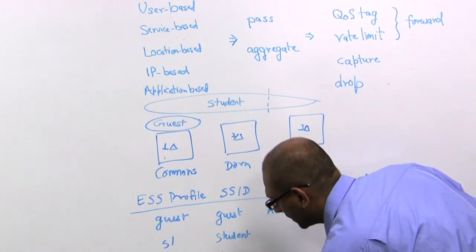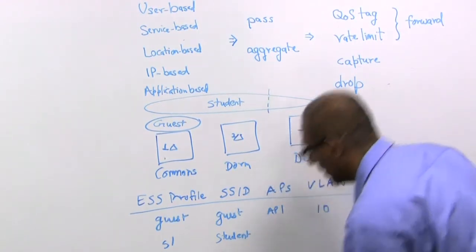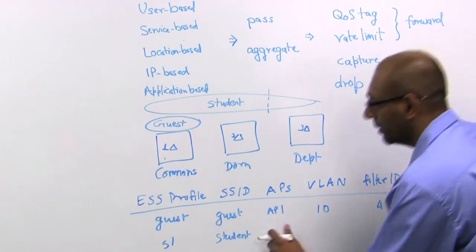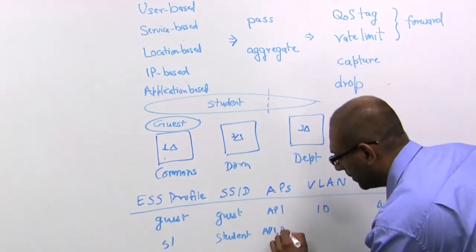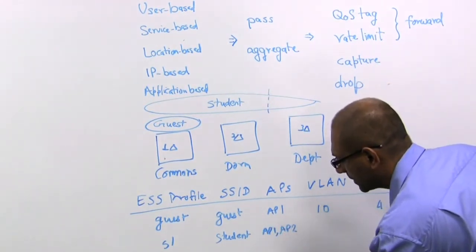So the advertised SSID is still student. And S1 gets applied to AP 1 and AP 2, while S2 gets applied to AP 3.